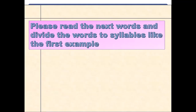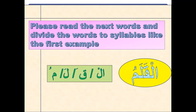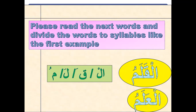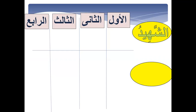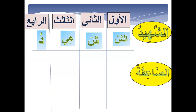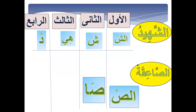Please read the next words and divide them into syllables. The first example is 'al-qalamu' — al-qalamu has four syllables: al-qa-la-mu. Another example — please read and divide the word into syllables: al-qalamu — four syllables.